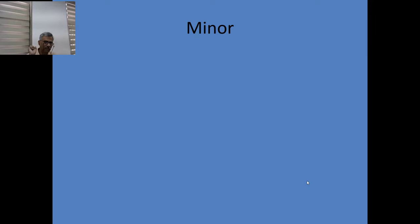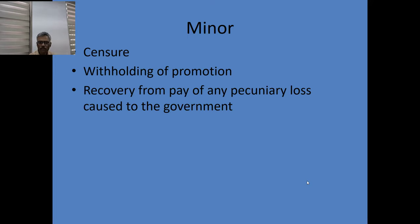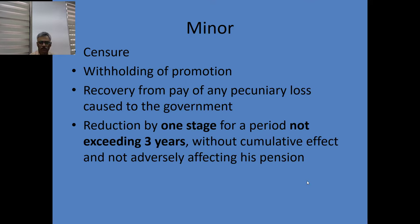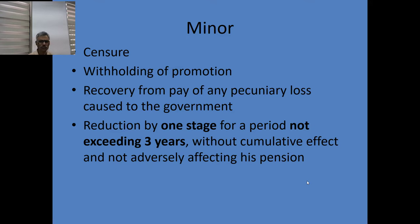There are five minor penalties and five major penalties. The minor penalties are: censure, withholding of promotion, recovery from pay of any pecuniary or financial loss caused to the government, and the fourth minor penalty is reduction by one stage for a period not exceeding three years without cumulative effect and not adversely affecting pension.